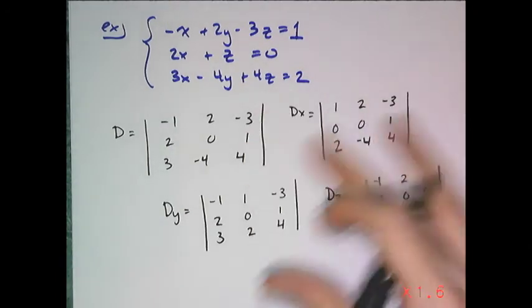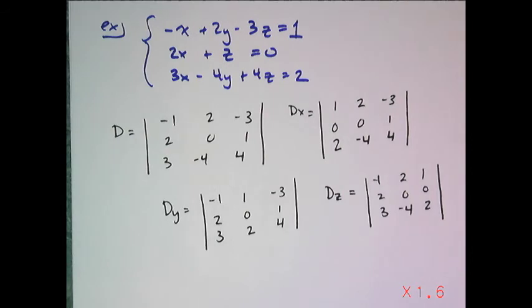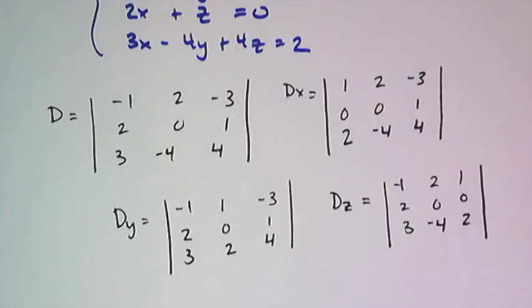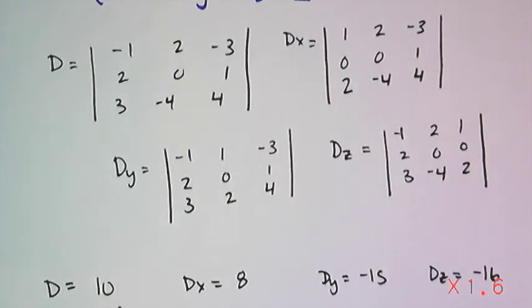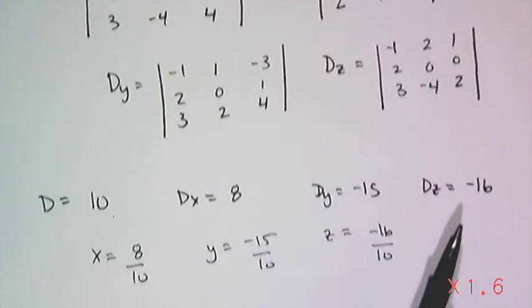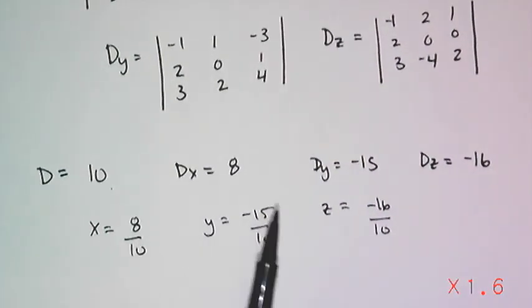So now all I have to do is find all four of these determinants, and then I'll have my solution to my system. So finding the determinants with my trusted calculator, I get d is equal to 10, d sub x equals 8, d sub y equals negative 15, and d sub z equals negative 16, which means that x has to be 8 over 10, y has to be negative 15 over 10, and z has to be negative 16 over 10.